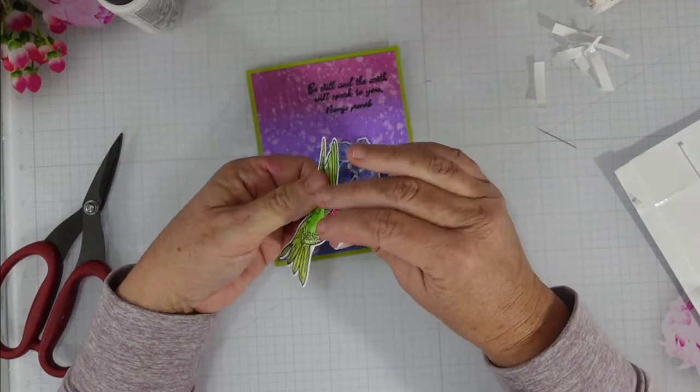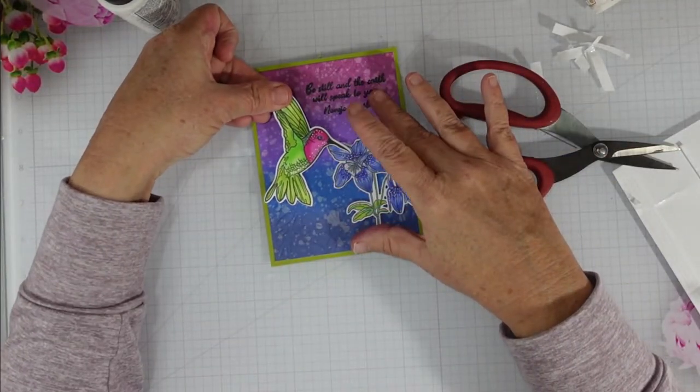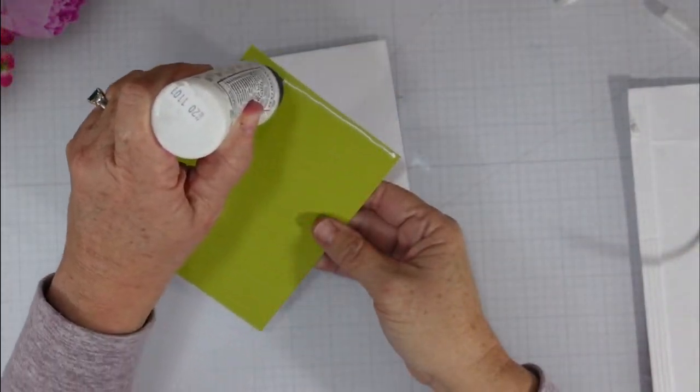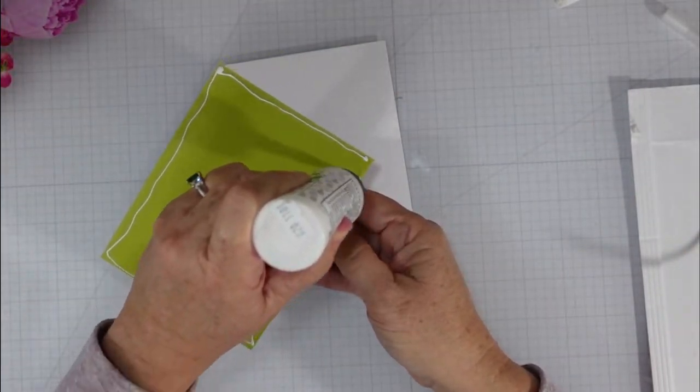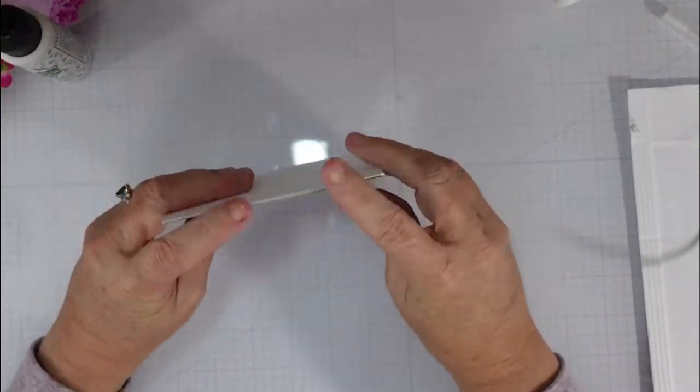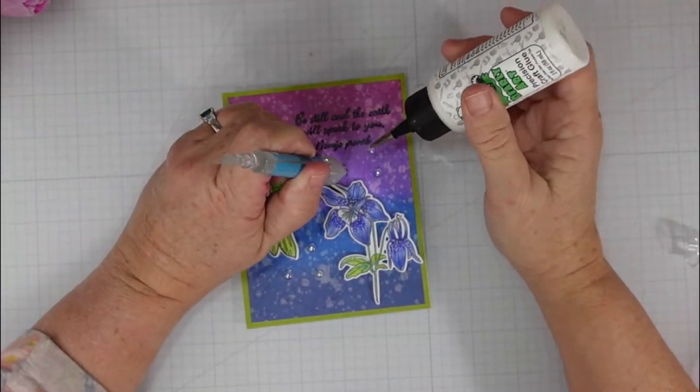Now I don't like the placement of this, and so I am going to lift it. I tend to not press things down really hard to begin with because if I want to reposition it, it really helps me out. And then I'm going to add this card panel to a 4.25 by 5.5 inch top folding card base.